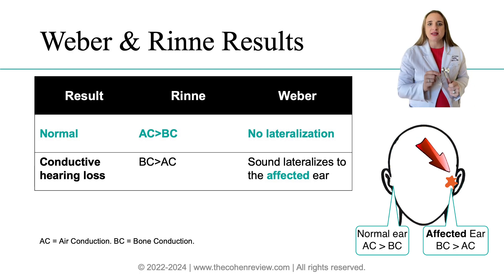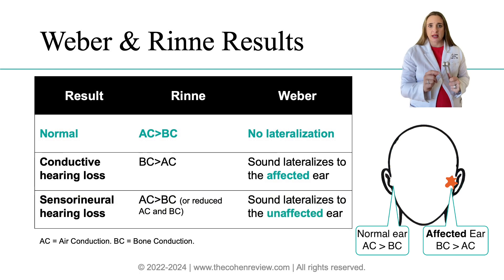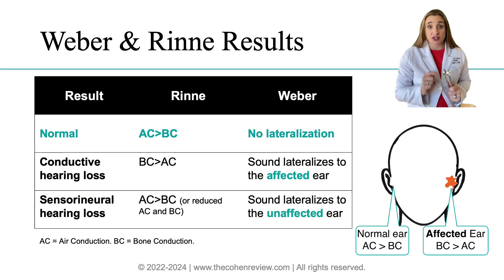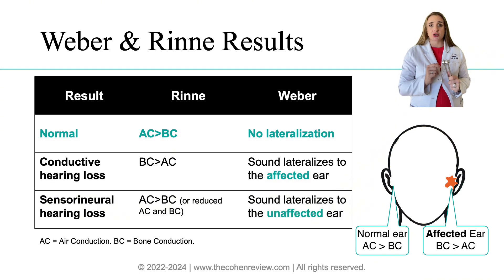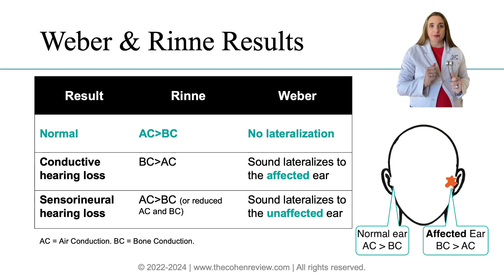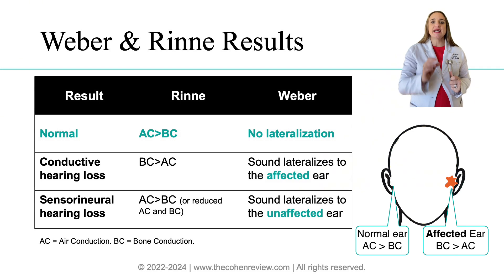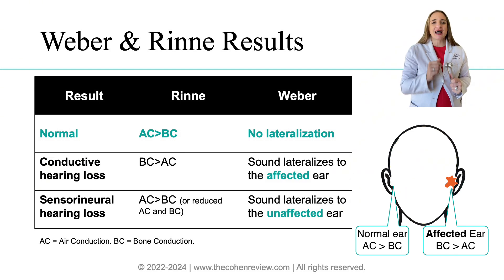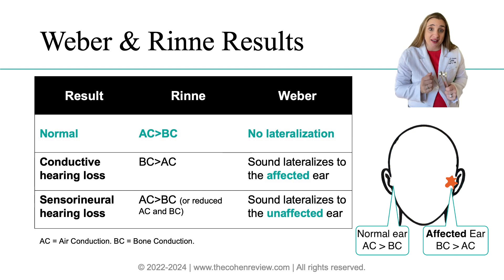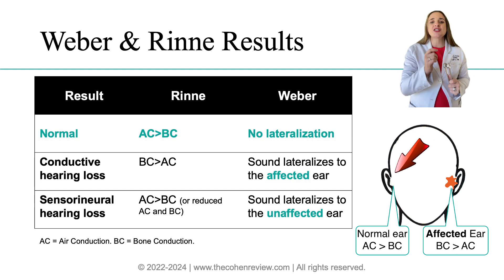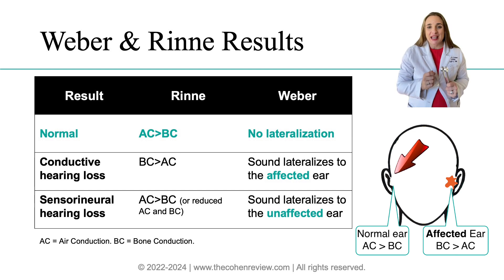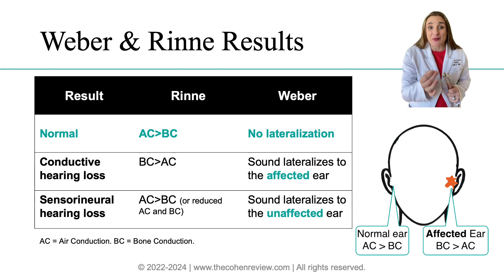Now if the Rinne test is normal — meaning air conduction is greater than bone conduction — we can rule out conductive hearing loss. So if the Weber test shows lateralization, it confirms there is a hearing issue. If the lateralization goes to the unaffected ear, it means there is sensorineural hearing loss, as the affected ear won't be producing the Weber vibrations very well.